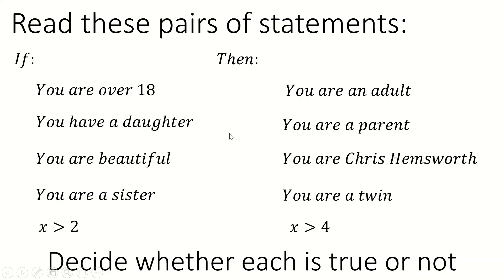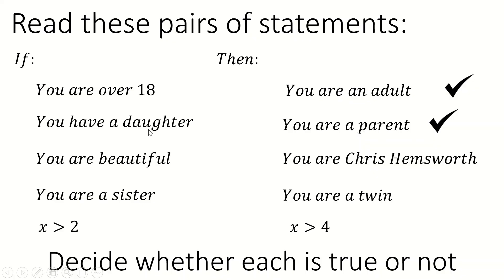If you're over 18, then you are an adult — I still think that's true, again by definition. So nothing has changed; it was true before and it's still true. If you have a daughter, you are a parent — yes, I think that's true. And remember, it used to not be. We had 'if you're a parent, then you have a daughter,' which probably wasn't true. But in this direction, it suddenly becomes true.